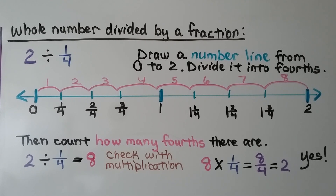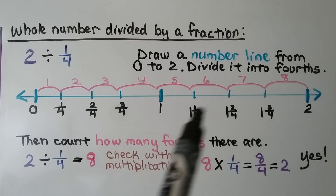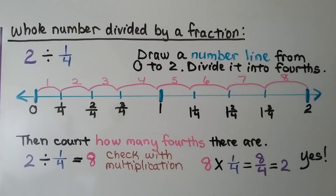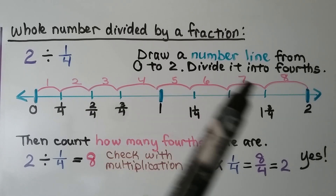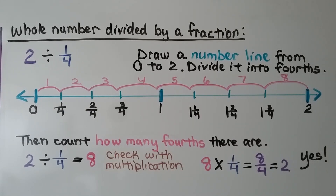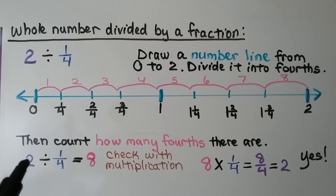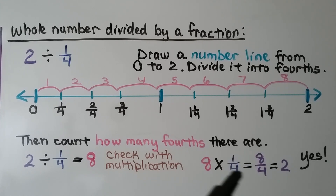When we have a whole number divided by a fraction, such as two divided by one-fourth, we can draw a number line from zero to two and divide it into fourths. We count how many fourths there are — we can see there are eight, so two divided by one-fourth is equal to eight. We can check it with multiplication: eight times one-fourth equals eight-fourths, which simplifies to two whole, so yes, it's correct.